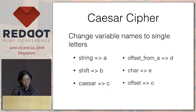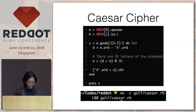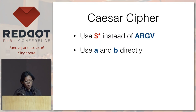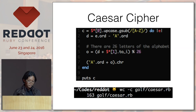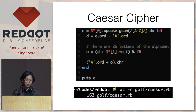The first thing we can do is change variable names into single letters. It becomes a lot less understandable — what is A, what is B, what is C, etc. But we were able to shave off 68 characters just from that. Next, we can use some shorthand like dollar-star instead of argv, and we can use A and B directly. If you're familiar with algebra, it's like substituting the value of A and B. It becomes like this. Similarly, we can use D and O directly, and we can remove comments because they are not needed in golf — golf is made to not be understandable.